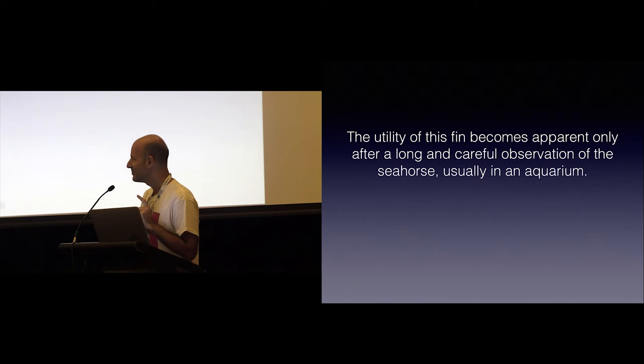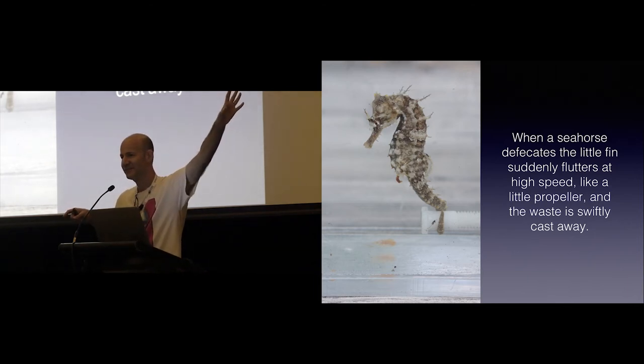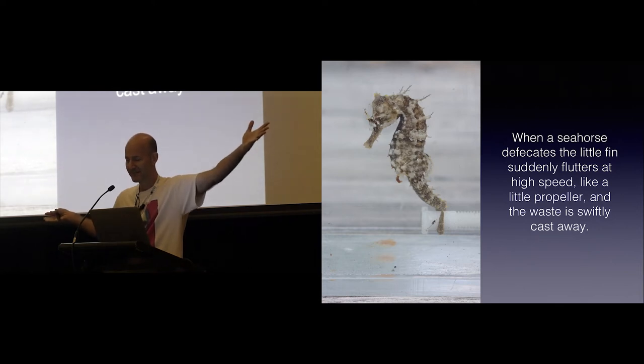But if you've ever kept a seahorse, you notice that the way it swims is with the dorsal fin on the back, and it uses the pectoral fins that are almost like ears to steer and rotate in different directions. It doesn't really use the anal fin when it's swimming. So that means that the supposition that it works like a rudder is probably not true.